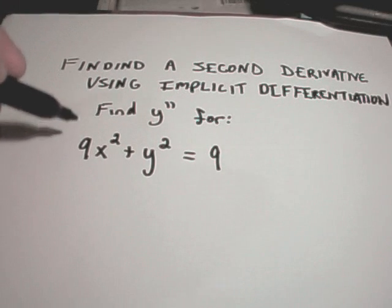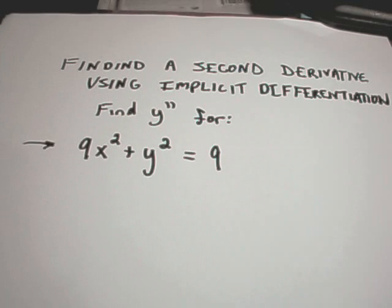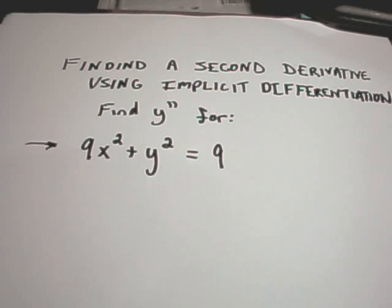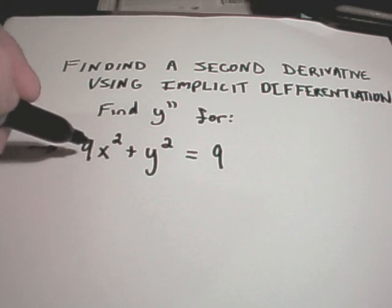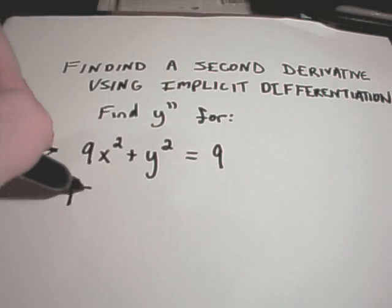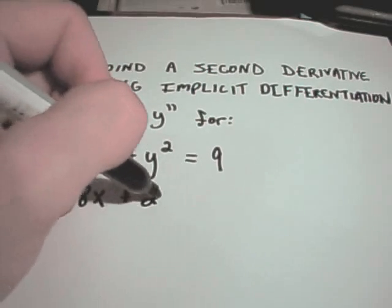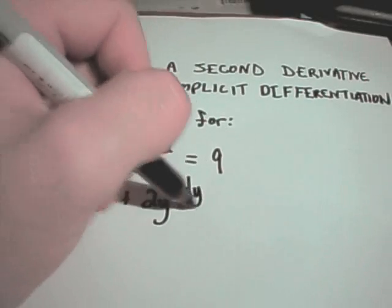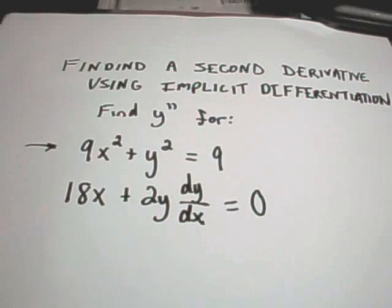So we're going to do implicit differentiation on this equation, 9x squared plus y squared equals 9. Remembering we're taking the derivative with respect to x, so the derivative of 9x squared will simply get 18x. The derivative of y squared will be 2y dy dx, and the derivative of 9 simply being 0.